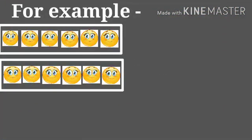For example, how many groups do we have here? We have two groups, two equal groups and each group has the same number of smileys. There are six smileys in each group.